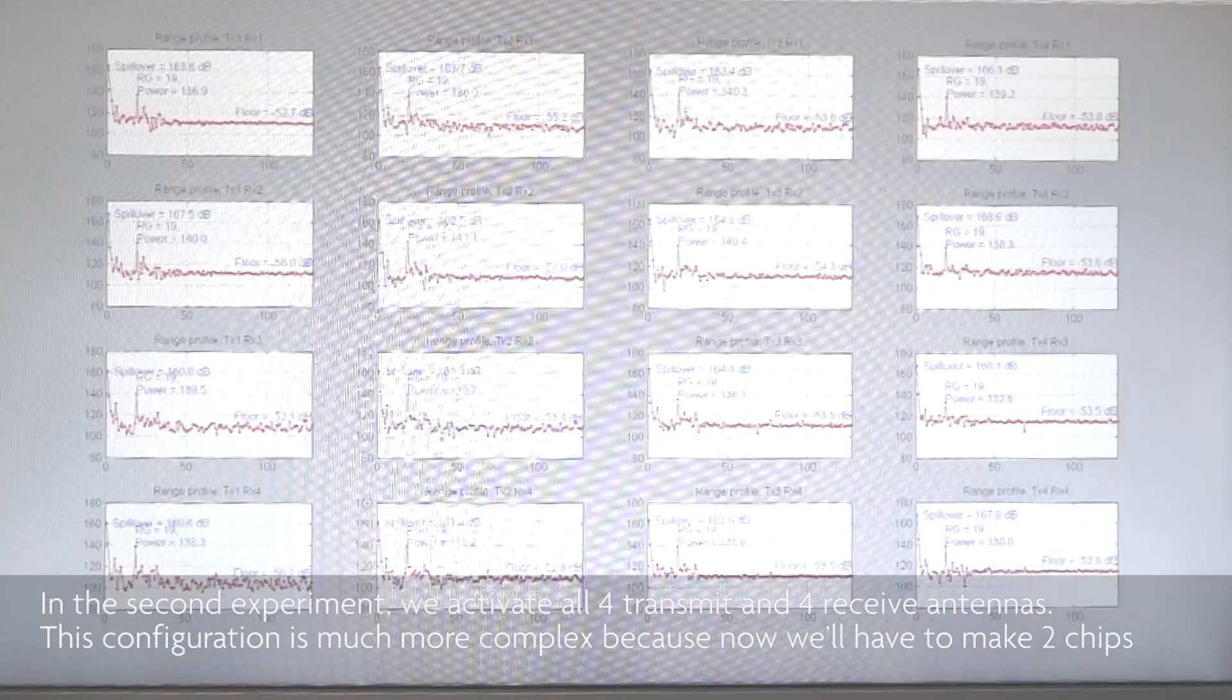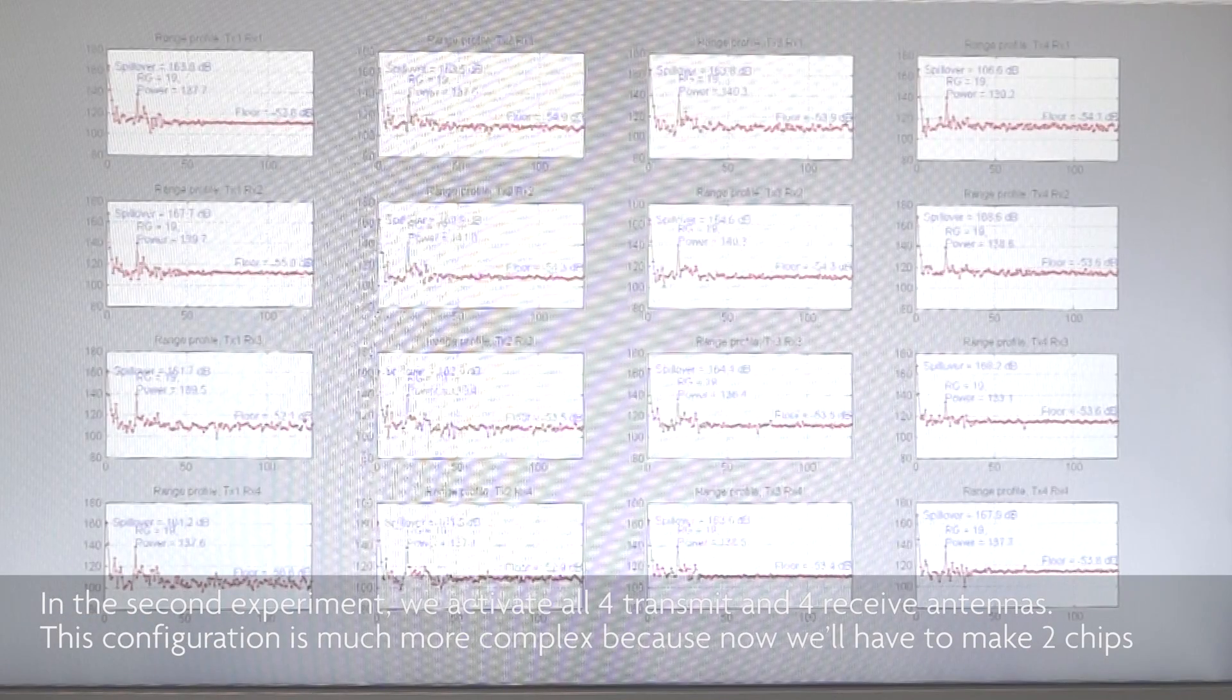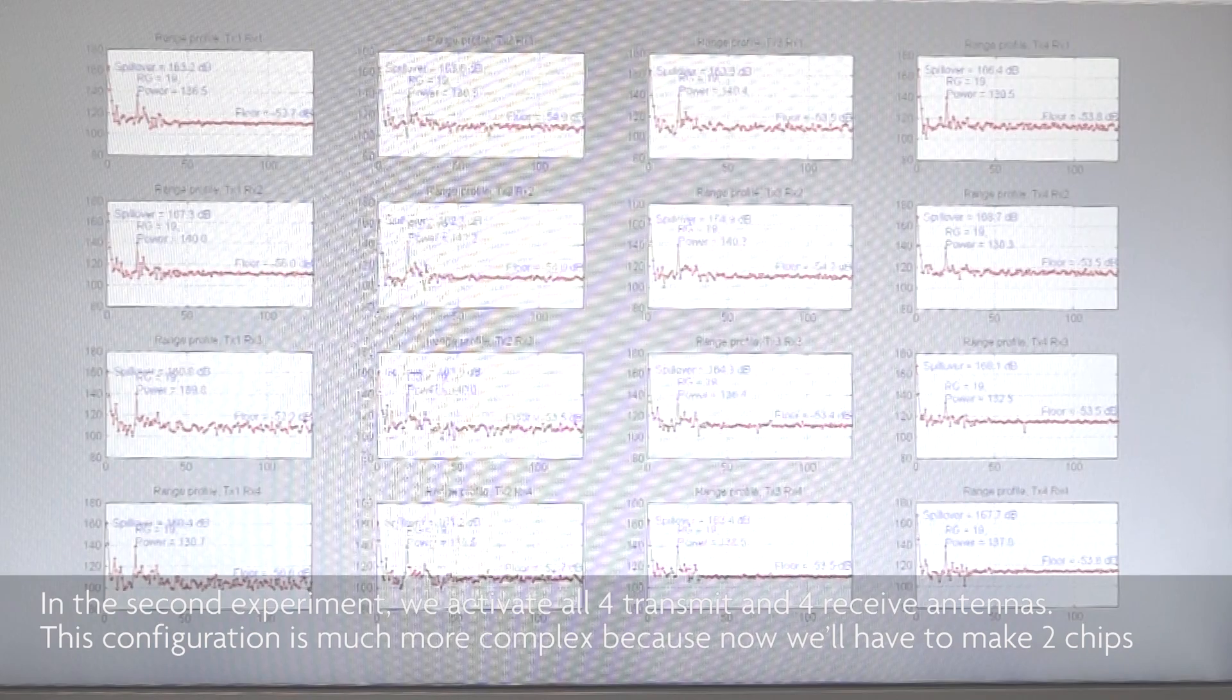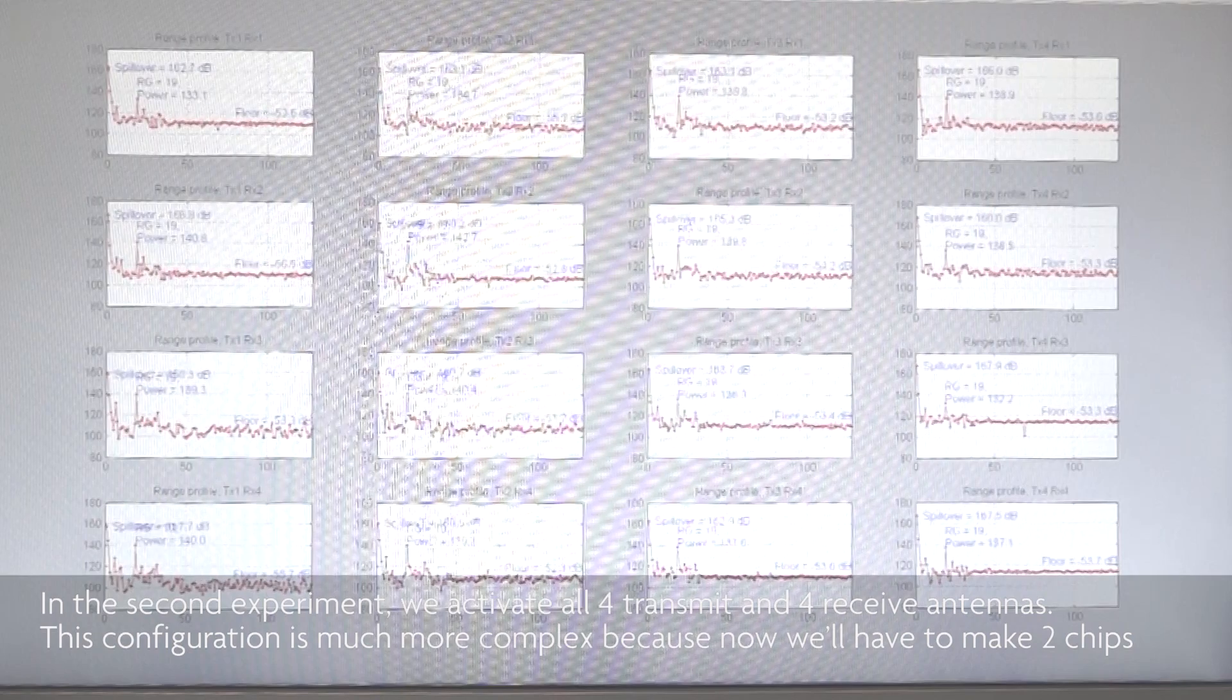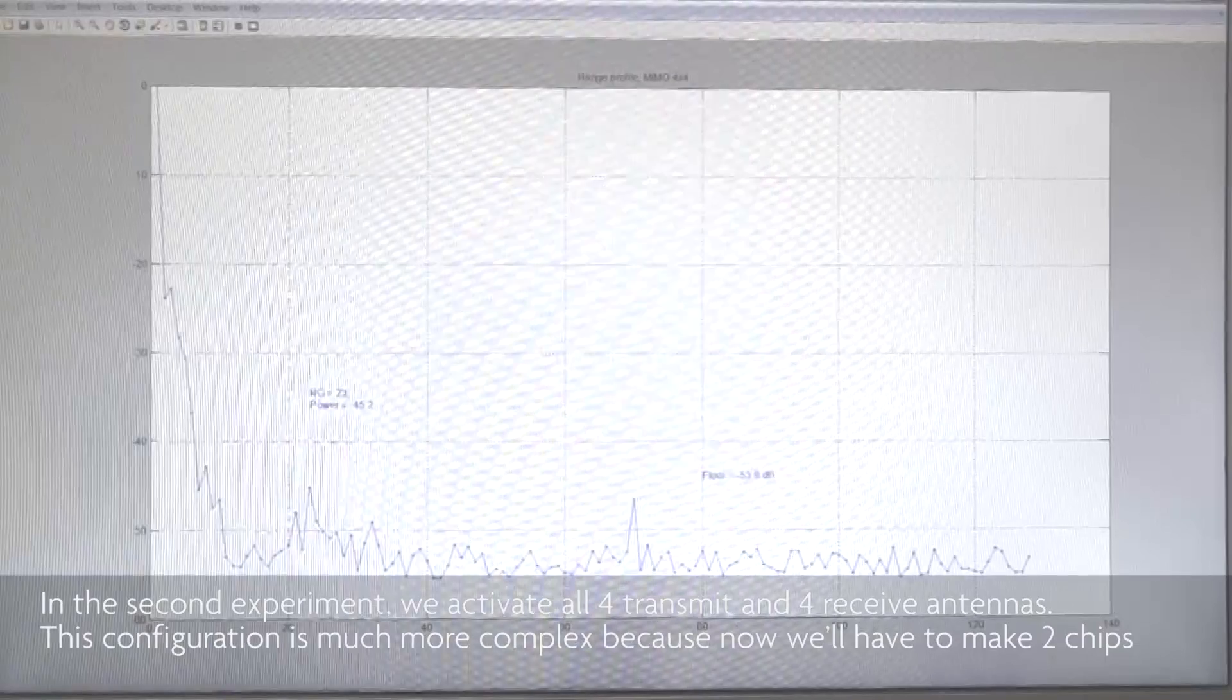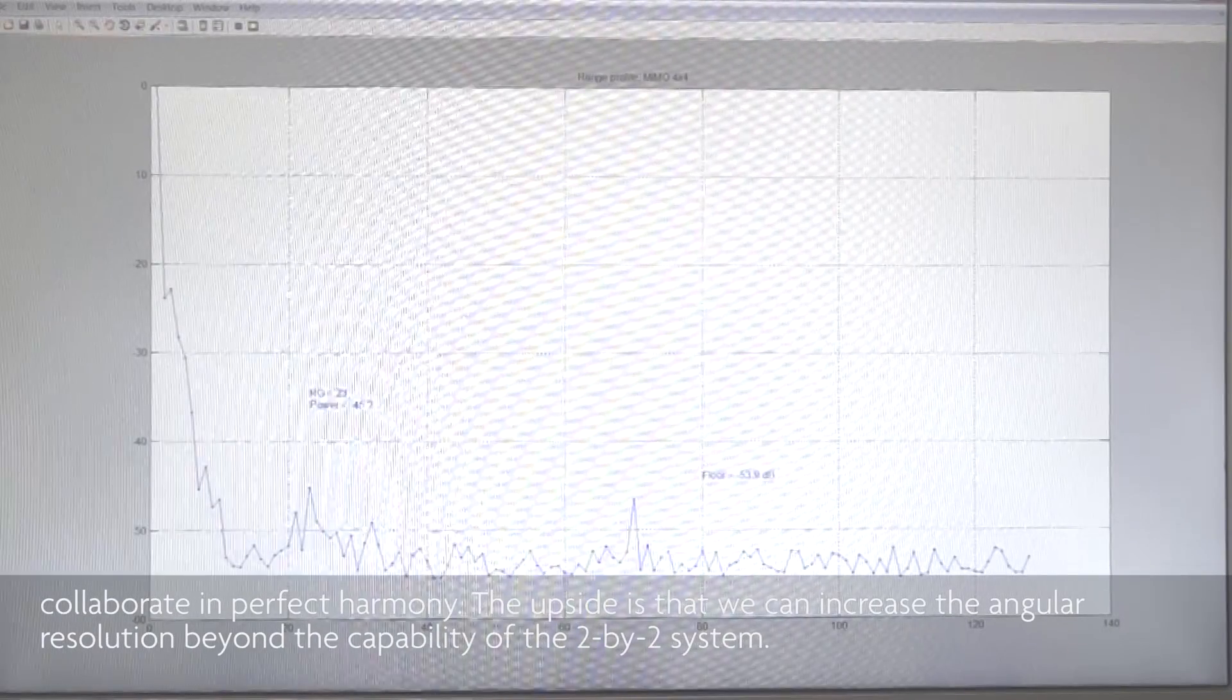In the second experiment, we activate all four transmit and four receive antennas. This configuration is much more complex, because now we'll have to make two chips collaborate in perfect harmony. The upside is that we can increase the angular resolution beyond the capability of the 2x2 system.